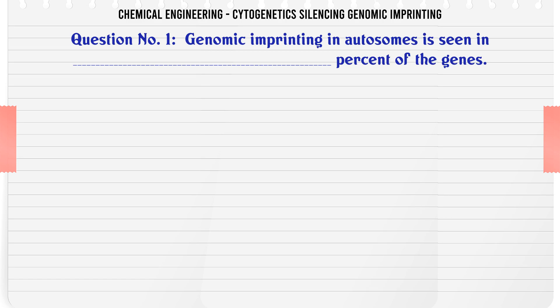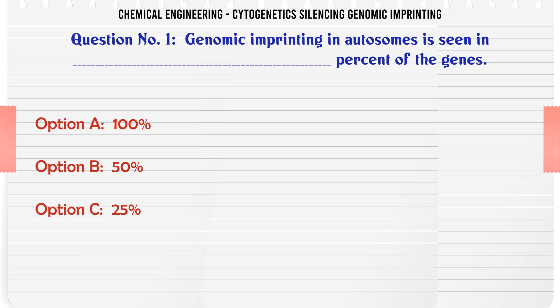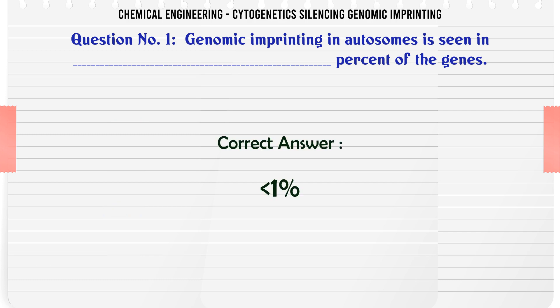Genomic imprinting in autosomes is seen in what percent of the genes? A. 100, B. 50, C. 25, D. 1. The correct answer is D: 1.